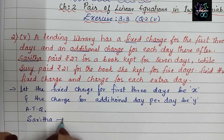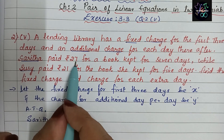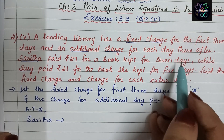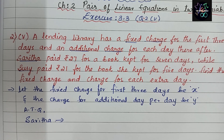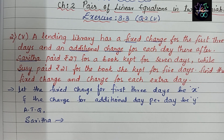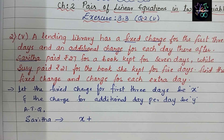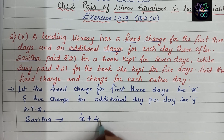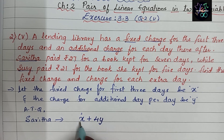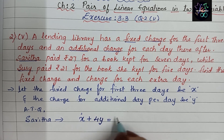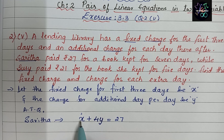Sarita paid rupees 27 for a book kept for 7 days. The first three days cost x. Out of seven days, the remaining four days are additional days charged at y per day. So the equation is: x + 4y = 27. That is three fixed days plus four additional days equals seven days. This is Equation 1.